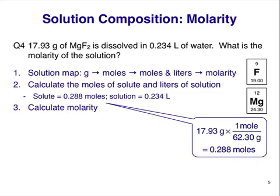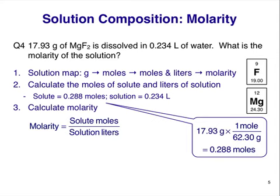We now have the information we need to calculate molarity. As always, the equation is: molarity equals solute moles divided by solution volume in liters. Dropping in all values produces a concentration — molarity — of 1.23 M, or 1.23 moles per liter.